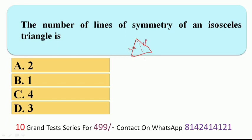The line of symmetry is also called the mirror line, because it presents two reflections of an image. For this isosceles triangle, there is only one such fold line — so the line of symmetry count is 1. Therefore Option B, one, is the right answer.